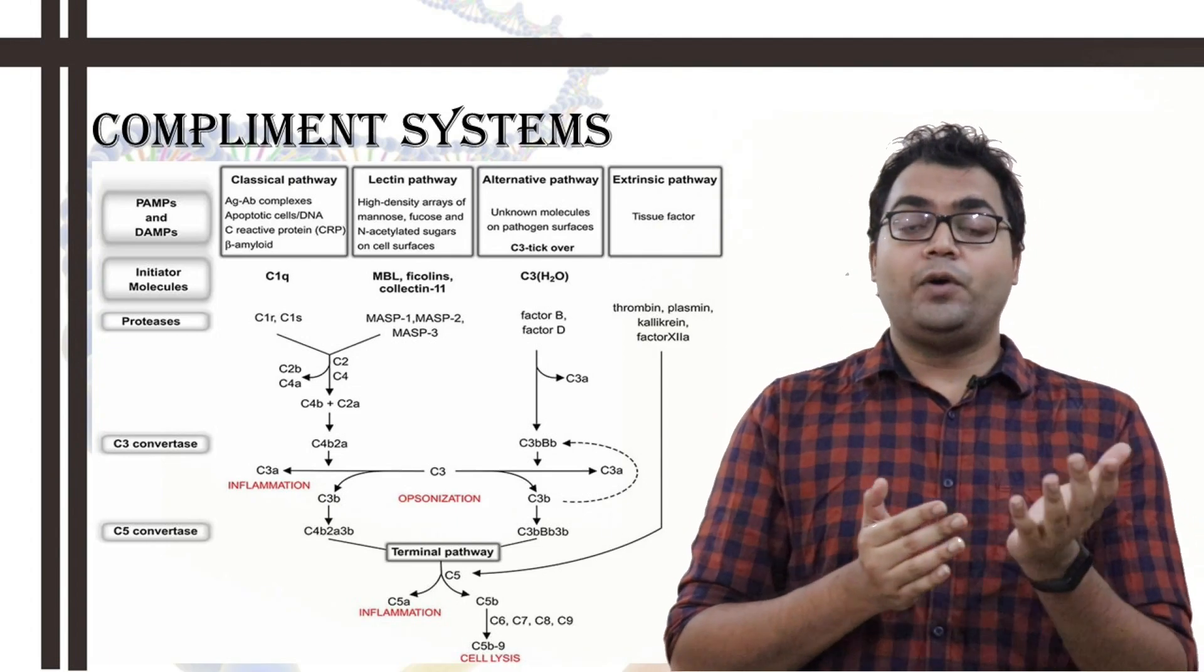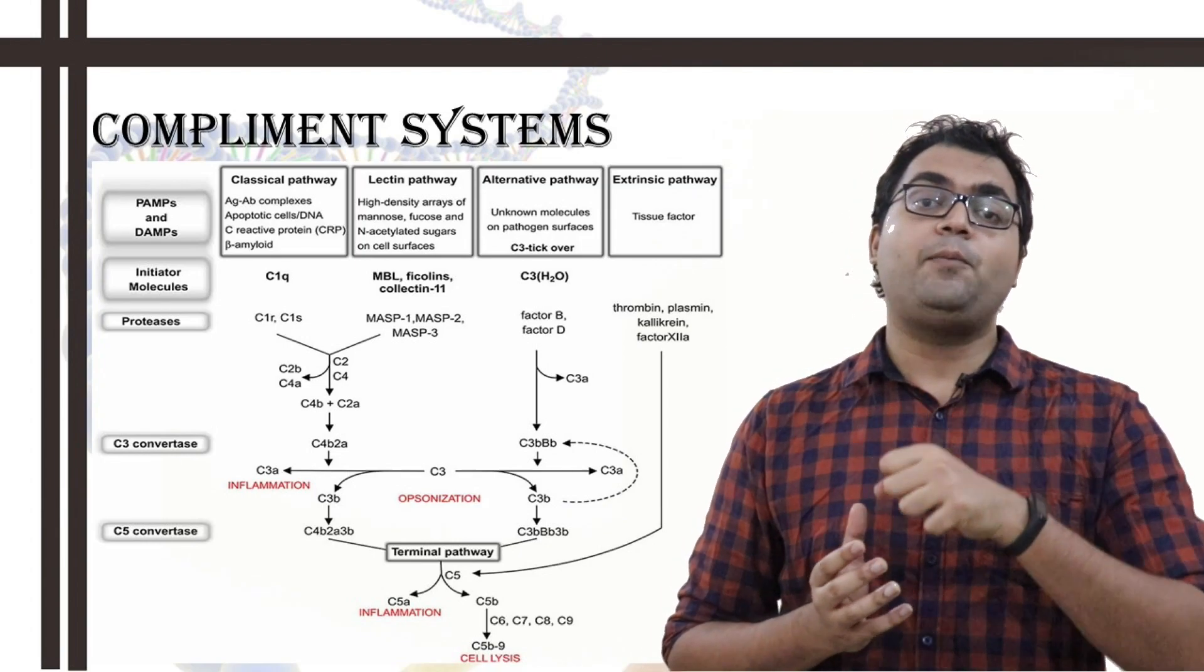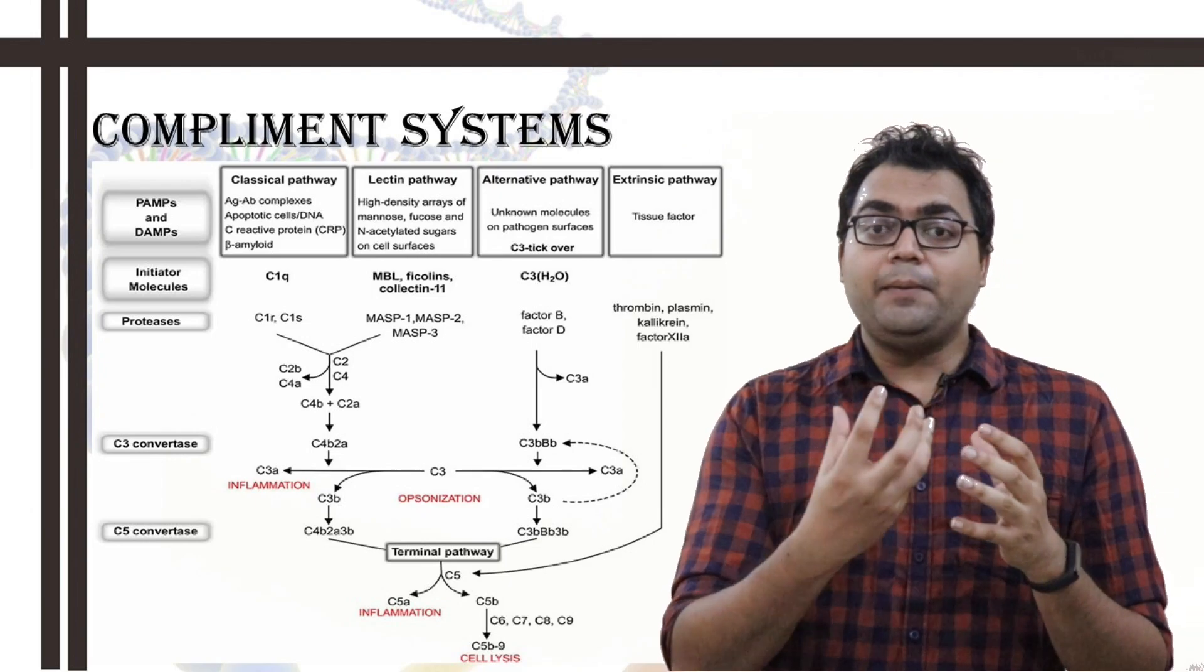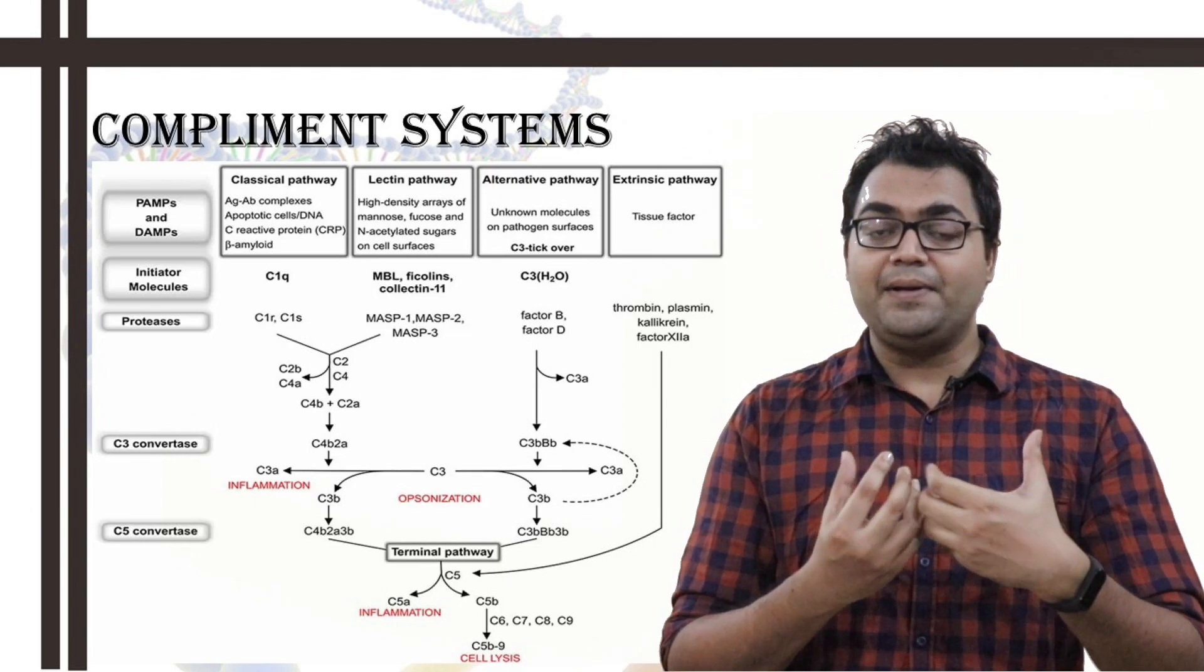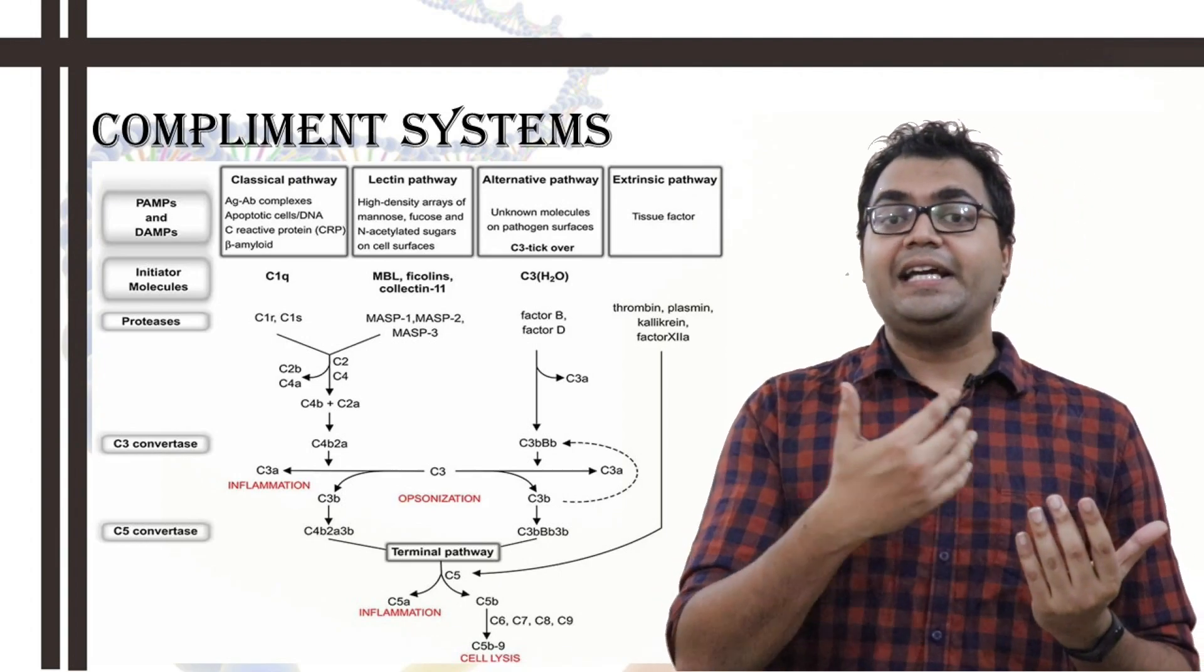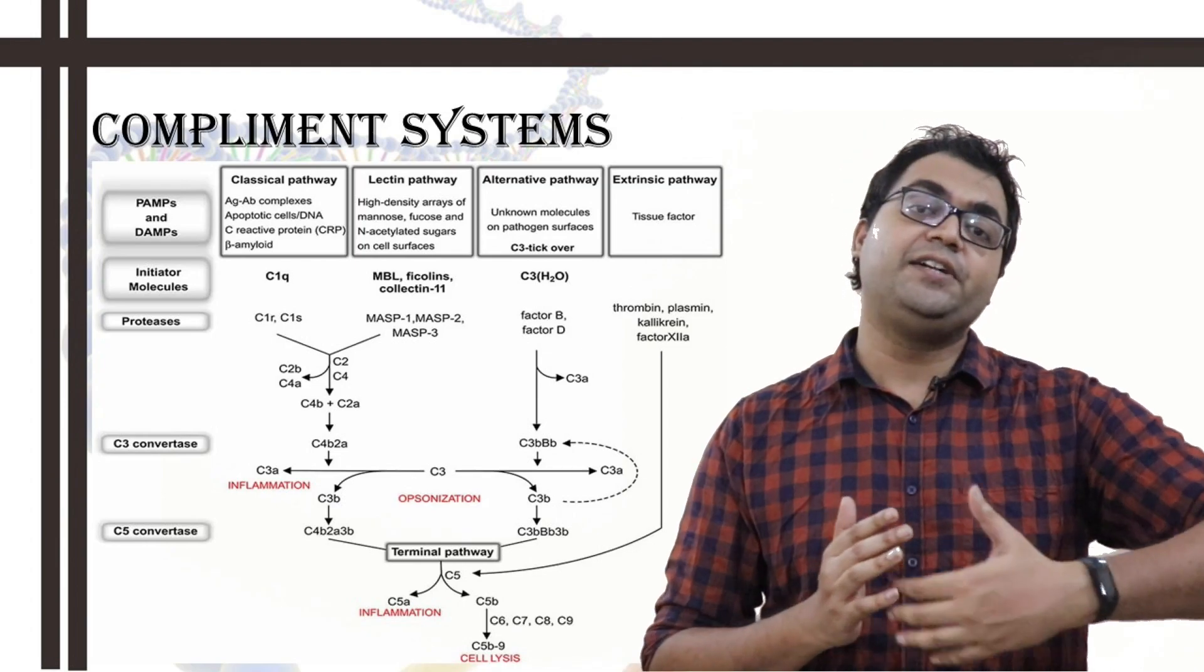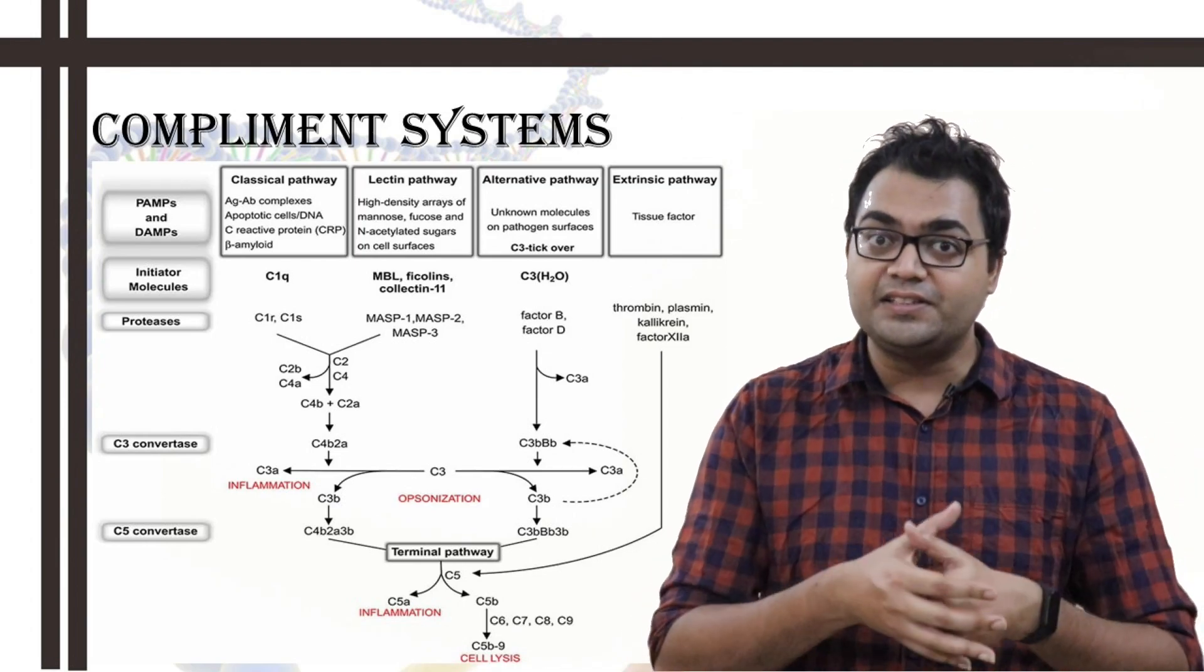Now, in various studies, ficolins, ficolins 1, 2, and 3 have also been found to bind to the carbohydrate residues. And after binding, conformational changes happen in the MBL and then it can cleave C2 and C4 and then same way, C4b2a, and C4b2a3b act as C3 convertase or C5 convertase. As I told you, they converge.